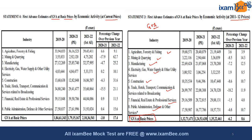Now, what do you understand by basic prices? Basic prices include the total cost of production and the taxes and subsidies which are production specific and not product specific. Therefore, when net indirect taxes on products are added to the gross value added at basic price, the figure we get is the gross domestic product at market price. So through the gross value added, we arrive at the gross domestic product at market price by adding the net indirect taxes on products.